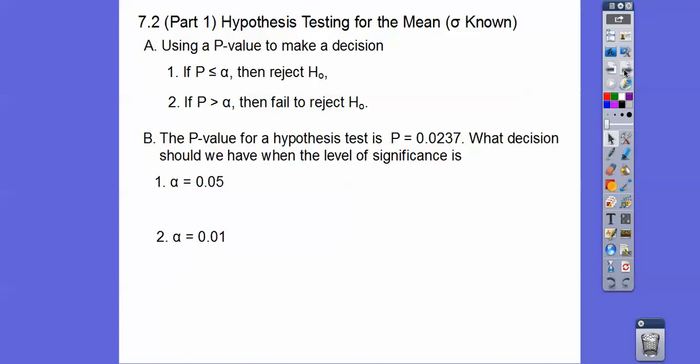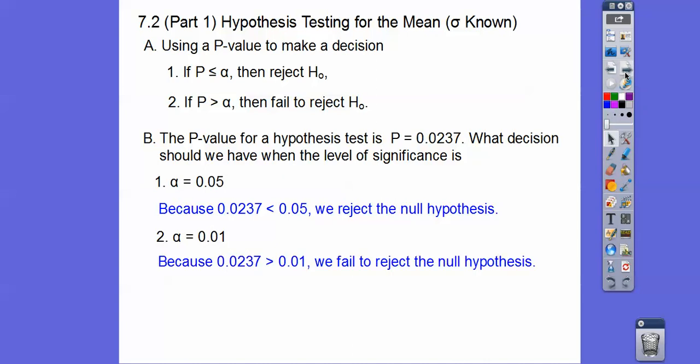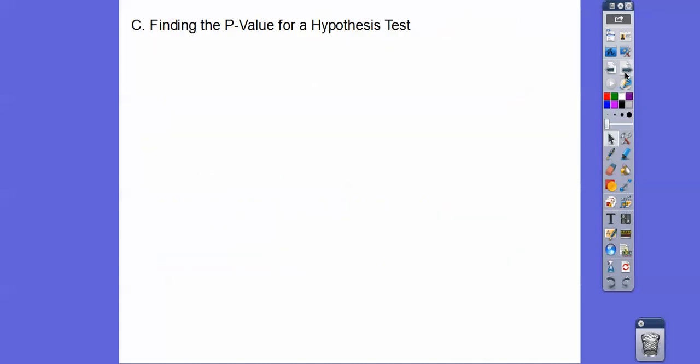So here's a p-value for the hypothesis test is 0.0237. What decision should we have when the level of significance is at 0.05? So this is less than 0.05, so at the 5% level, we're going to reject the null hypotheses. Now 0.0237 is greater than 0.01, so at the 1% level, we're going to fail to reject the hypotheses.